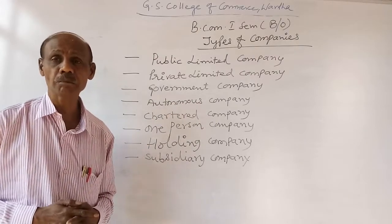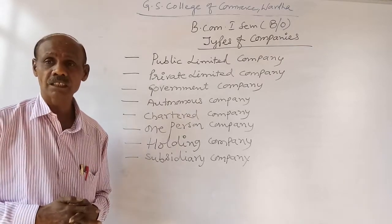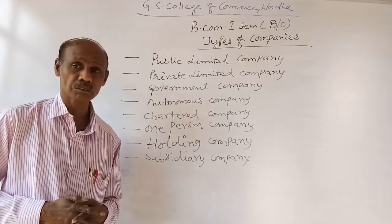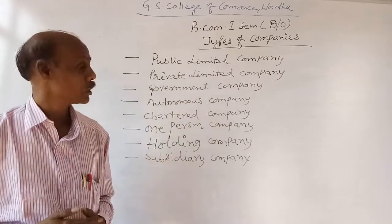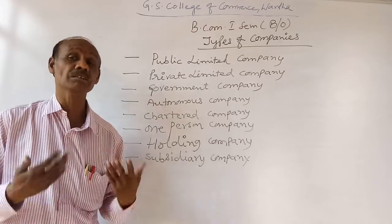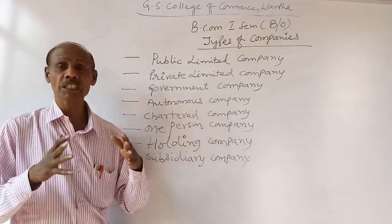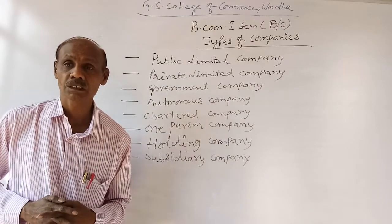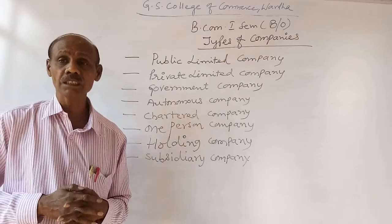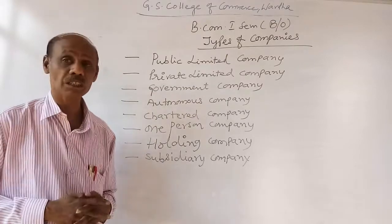The next type is an autonomous company. An autonomous company is a body that is constituted and maintained independently under an autonomous structure. After 1991, most business organizations started during the second five-year plan as public sector units were transformed into autonomous companies. Here, the government relinquished its direct control and the entire control was placed in the hands of a board or council nominated for the management of the company.